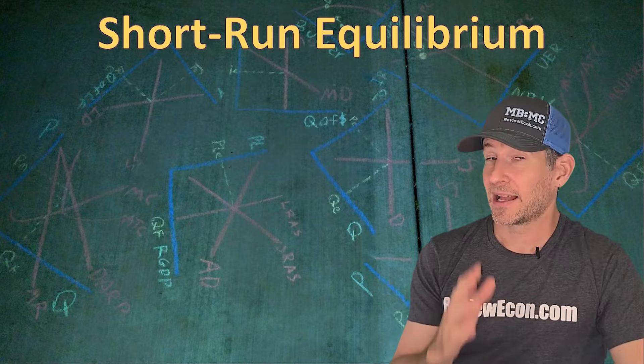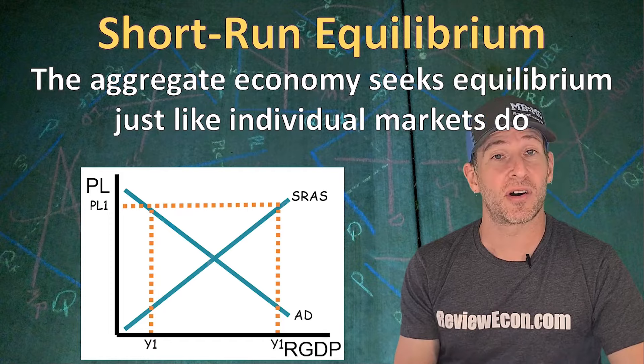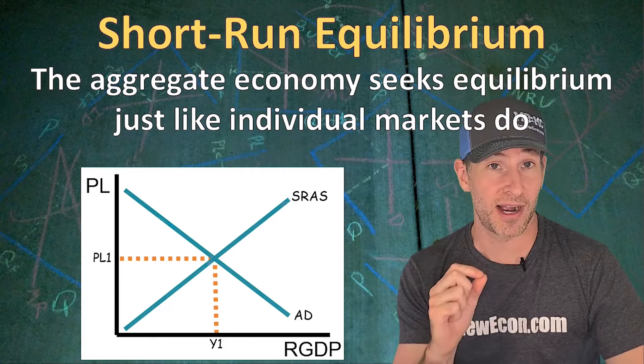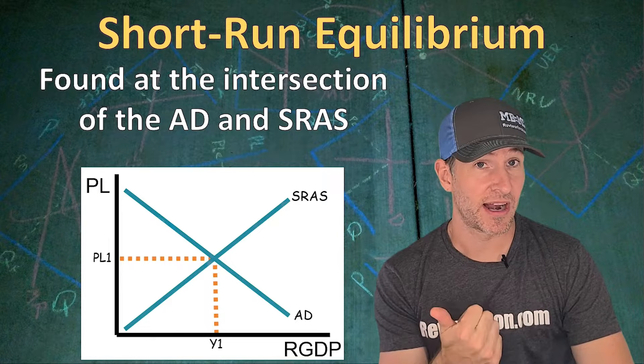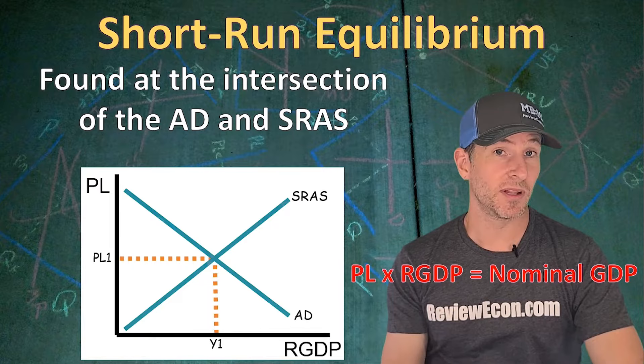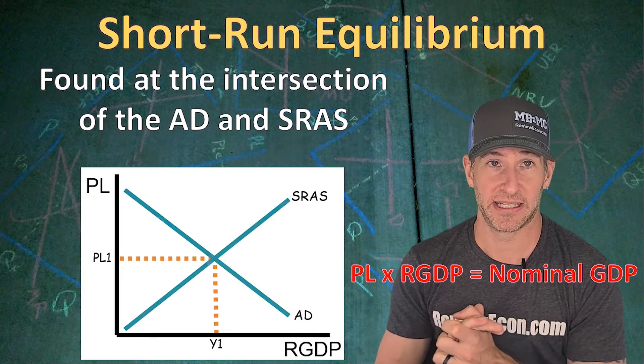Next, we're going to talk about short run equilibrium. Just like with the supply and demand graph for individual products, the aggregate economy is also going to seek the equilibrium price and quantity. Here we call the price the price level, and the equilibrium quantity is the real output, labeled Y1. That equilibrium is found at the intersection between the short run aggregate supply curve and the aggregate demand curve. Wherever our equilibrium is, multiply the real GDP by the price level and that gives you the nominal GDP.